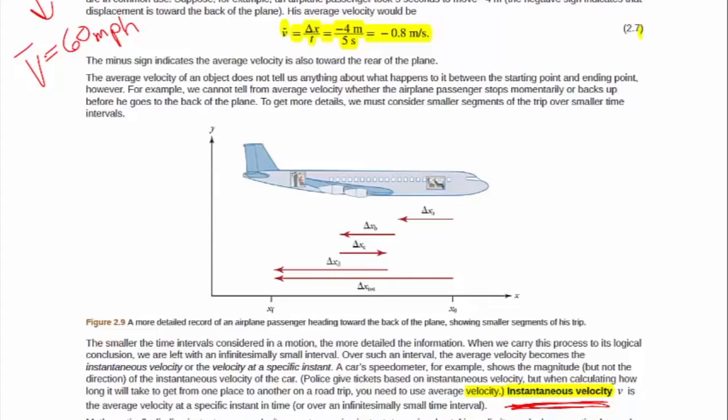Instantaneous velocity is what is your speedometer showing instant by instant. This idea is your speedometer, showing you what's going on instant by instant.